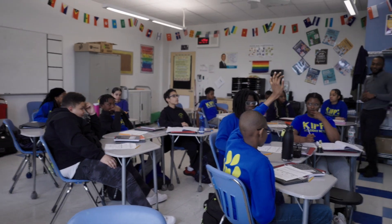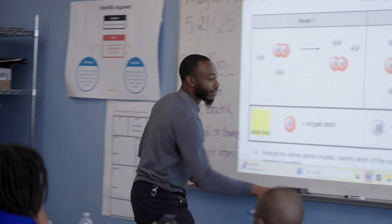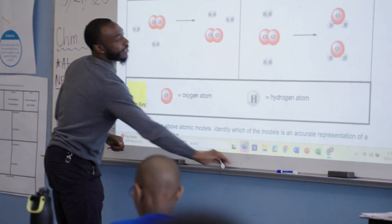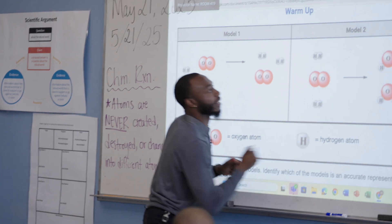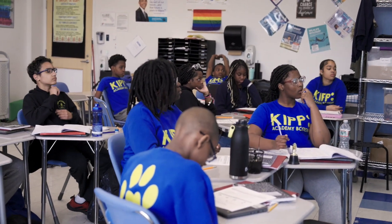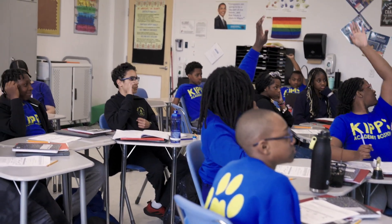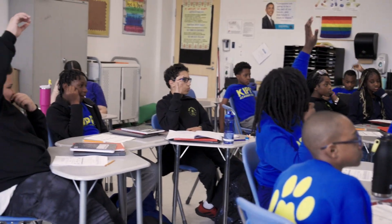That's a strong hand, Nathan. Option B is absolutely the correct answer here, sixth grade. Model 2 is that accurate chemical reaction — but why? Raising a silent hand: how did you know? Sixth grade, listen carefully to the question: what's wrong with Model 1? Why isn't Model 1 showing a chemical reaction?